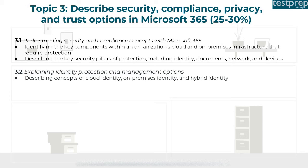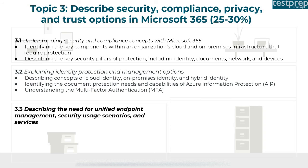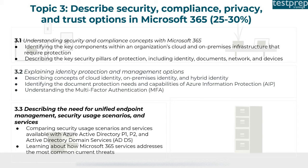Number two: explaining identity protection and management options, covering cloud identity, on-premises identity, and hybrid identity concepts, identifying document protection needs and capabilities of Azure Information Protection, and understanding multi-factor authentication. Number three: describing unified endpoint management security, comparing services available with Azure Active Directory P1, P2, and Active Directory Domain Services, and learning how Microsoft 365 addresses common current threats.